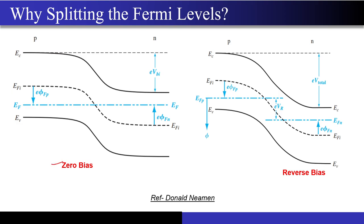Now, for zero bias, there is one single Fermi level throughout the material. But for reverse bias, I have split it into two quasi-Fermi levels. The question is: why can't we have a single Fermi level for reverse bias just as in the zero-bias case? Why are we splitting into two different levels?